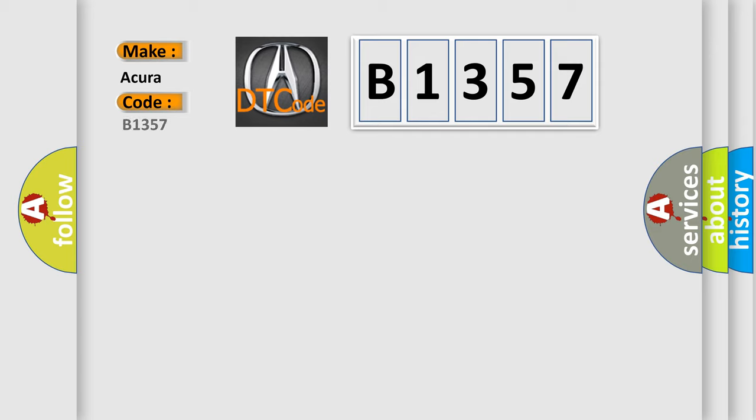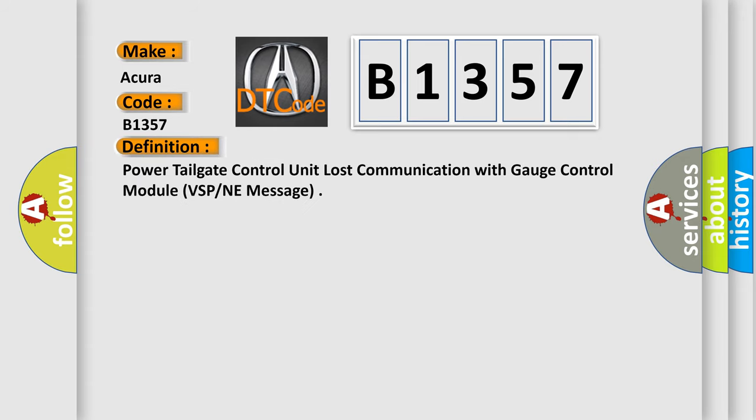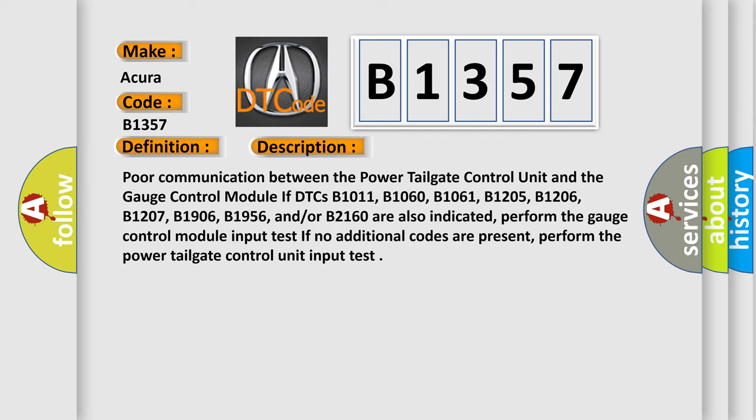So, what does the diagnostic trouble code B1357 interpret specifically for car manufacturers? The basic definition is: Power tailgate control unit lost communication with gauge control module, VSPNE message. This is a short description of this DTC code — poor communication between the power tailgate control unit and the gauge control module.